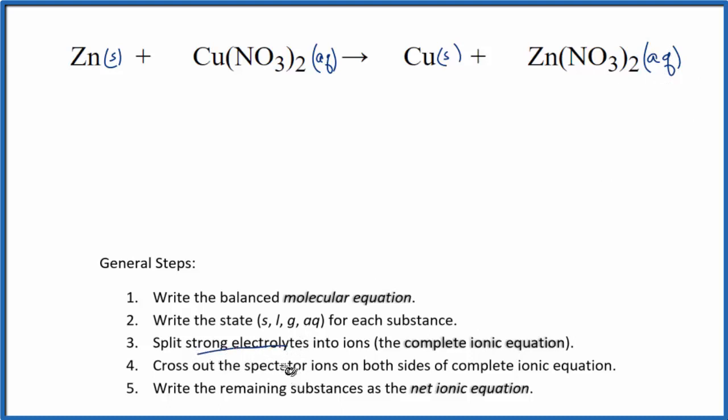Next, we split the strong electrolytes into ions to get the complete ionic equation. Zinc is solid, so we can't split it up. I'll just write Zn and add the states at the end.